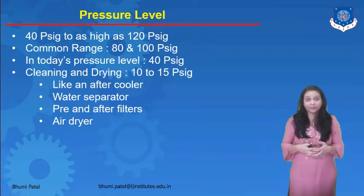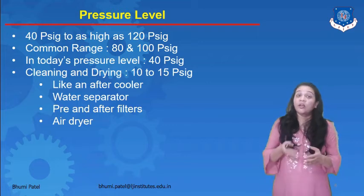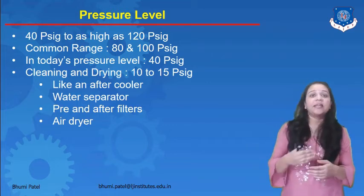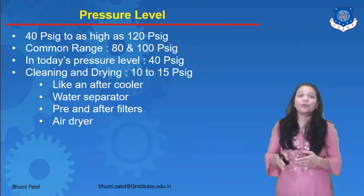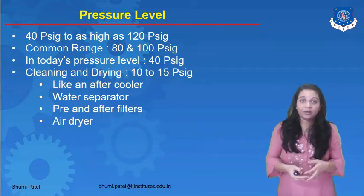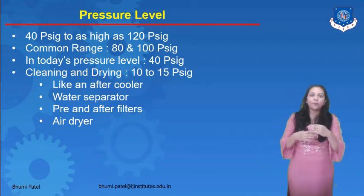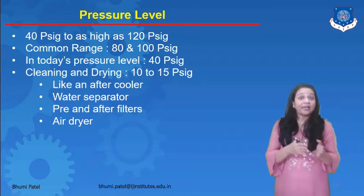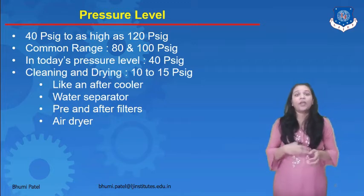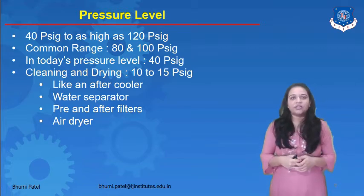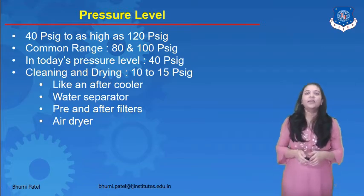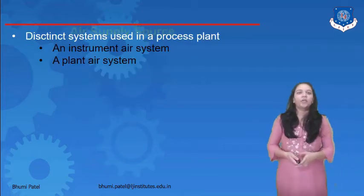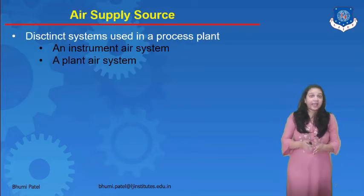If the instrument is used for cleaning and drying purposes, the pressure level range is 10 to 15 PSIG. Components used for cleaning and drying include an after cooler, a water separator that separates the output into two levels, pre and after filters — which are compulsory requirements of the instrument air system — and an air dryer to dry the air. For these components, the pressure level is 10 to 15 PSIG.